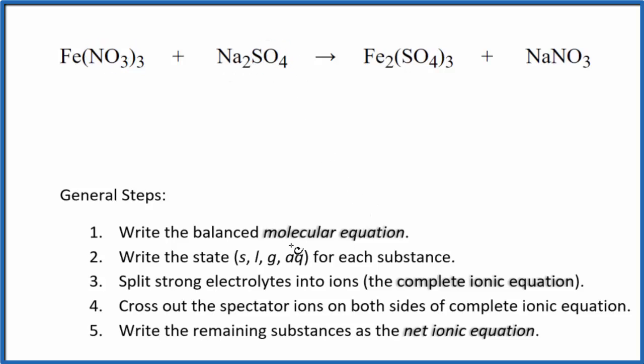The first thing we need to do with net ionic equations is balance the molecular equation. It looks like we have one iron atom here and two here, so we'll put a 2 in front of the iron 3 nitrate. That balances the irons, but now we have three nitrates times two, six nitrate ions.